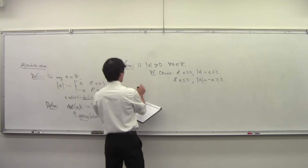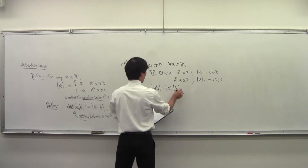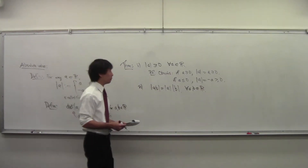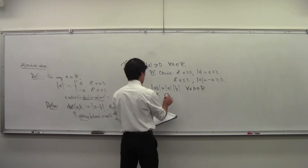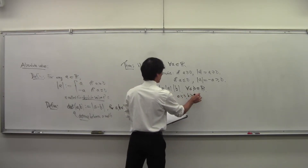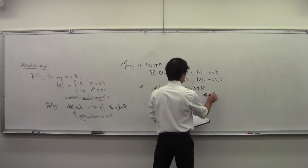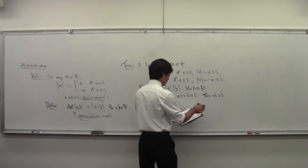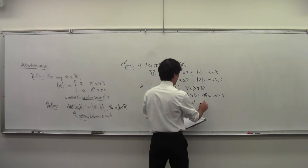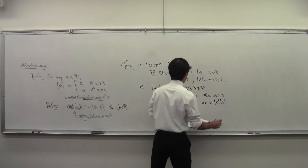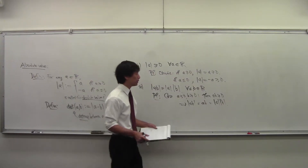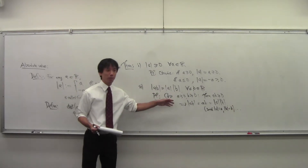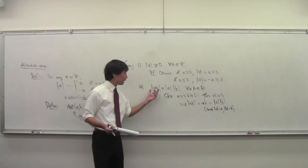Property number two: the absolute value of a product is the product of the absolute values, again for any pair of numbers. The proof is a little bit not particularly interesting — you break it up into cases. Case when both are positive: you know that ab is greater than or equal to zero by the appropriate property, and so the absolute value of ab equals ab, which is the same as the absolute value of a times the absolute value of b, since absolute value of a is a and absolute value of b is b. You break it up into cases; it's not particularly interesting, but it's true.